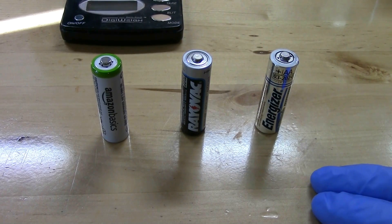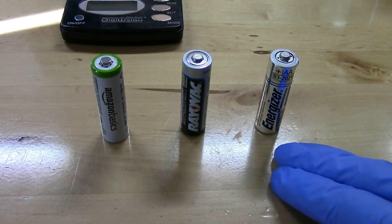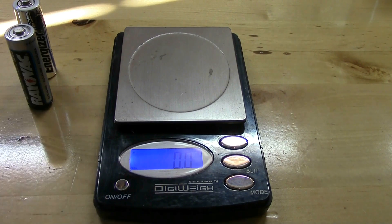They're all double A's so they're all exactly the same size. This one's a rechargeable, this one's a standard alkaline, and this one's the ultimate lithium. So since they're all the same size they have the same volume and energy density is going to be determined just by the weight. So let's weigh them and see what the difference is. So this is the rechargeable,